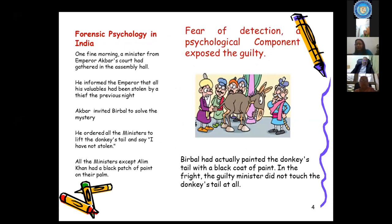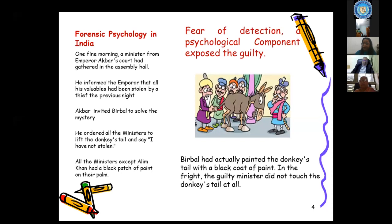One morning, a minister from Akbar's court gathered in the assembly hall and informed the emperor that all his valuables had been stolen by a thief the previous night. Akbar invited Birbal to solve the mystery. He ordered all ministers to lift a donkey's tail and say 'I have not stolen.' All ministers except Alim Khan had a black patch of paint on their palm, as Birbal had painted the donkey's tail with black paint. The guilty minister did not touch the tail at all. The main principle is fear of detection.